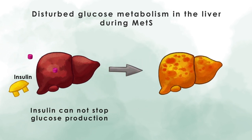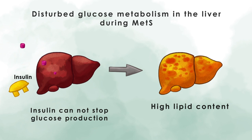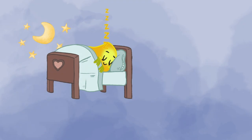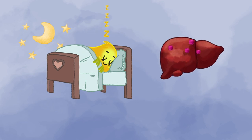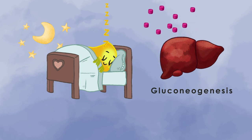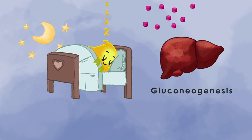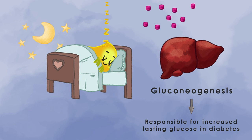This is often associated with high lipid content in the liver, a condition we will hear about later in this unit. When we are not eating — for example, during the night — our body still needs glucose. The liver can produce that in a process called gluconeogenesis. This contributes to approximately half of the total hepatic glucose production, and it is primarily responsible for the increase in fasting glucose in individuals with diabetes.